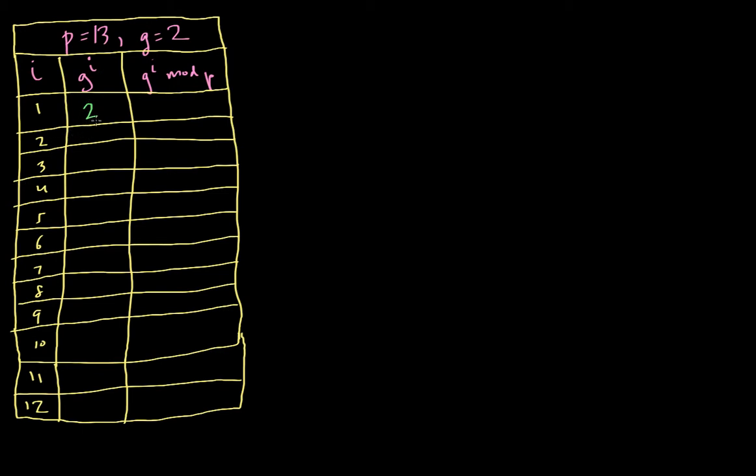g to the i for i equals 2 is 2 squared, which equals 4. Then we have 2 cubed, which is 8. 2 to the 4th is 16. 2 to the 5th is 32. 2 to the 6th equals 64, and I've been in cryptography for a while, so you'll see I know my powers of 2 relatively well. 2 to the 7th is 128, 2 to the 8th is 256, 2 to the 9th is 512, 2 to the 10th is 1,024, 2 to the 11th is 2,048, and 2 to the 12th is 4,096.